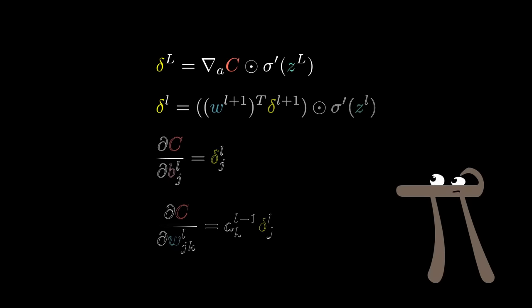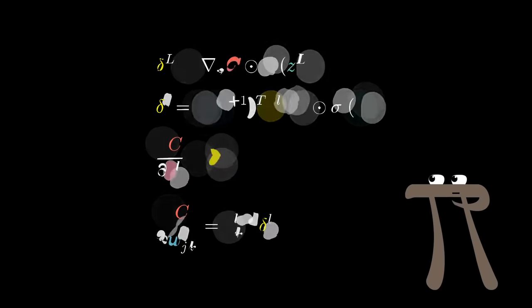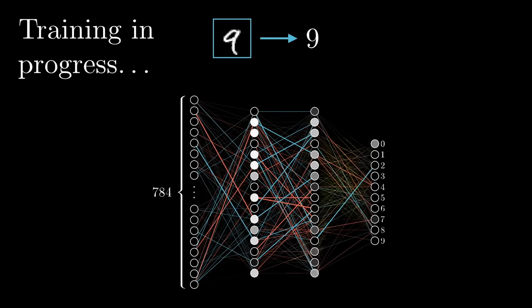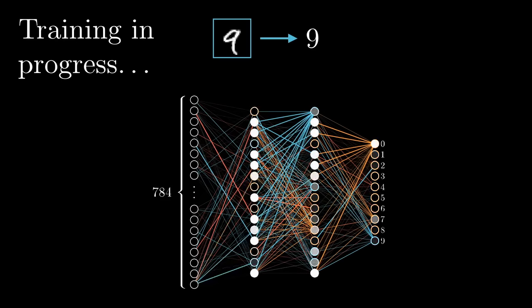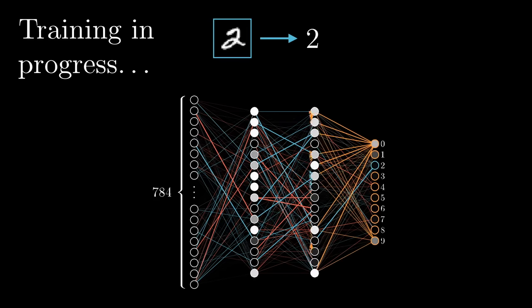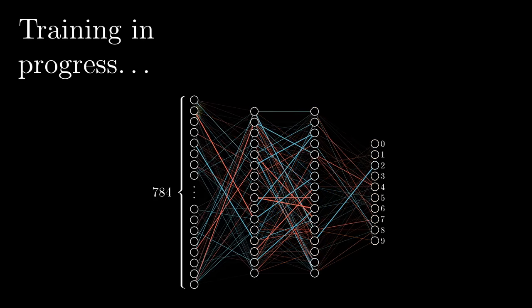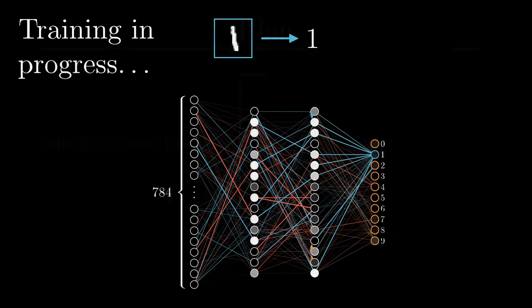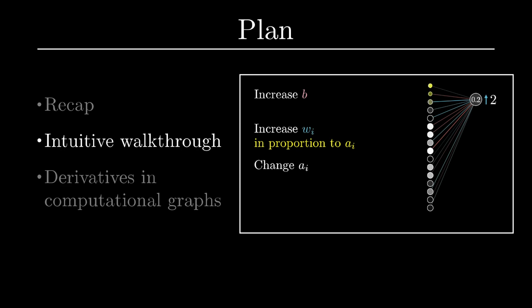Personally, when I was first learning about backpropagation, I think the most confusing aspect was just the notation and the index chasing of it all. But once you unwrap what each part of this algorithm is really doing, each individual effect that it's having is actually pretty intuitive, it's just that there's a lot of little adjustments getting layered on top of each other. So I'm going to start things off here with a complete disregard for the notation, and just step through those effects that each training example is having on the weights and biases.